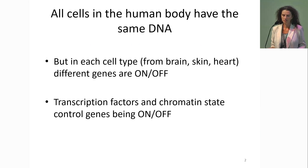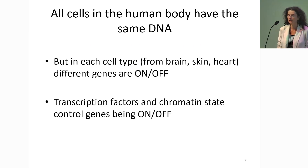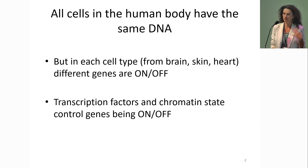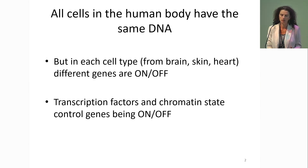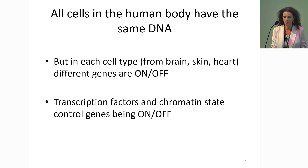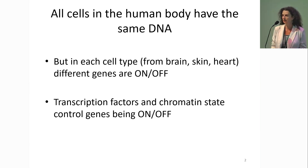All cells in the human body have the same DNA, but all of our cell types — our brain cells, our skin cells, our heart cells — have different genes that are on or off, and that makes them function differently. Part of what changes gene expression in a cell type is that transcription factors and chromatin states are different, and that controls which genes are on or off.